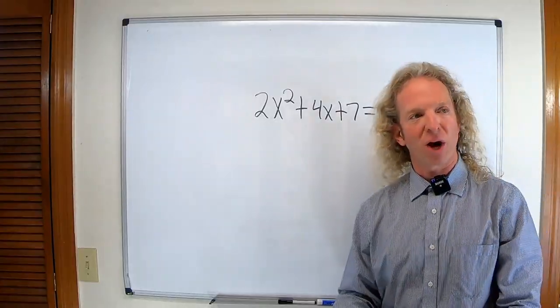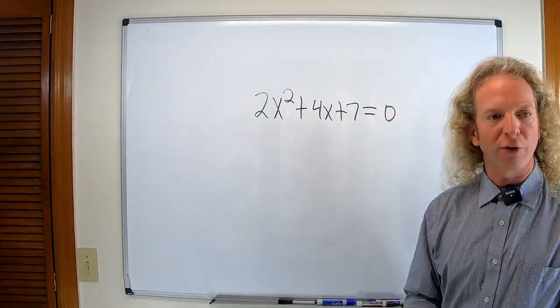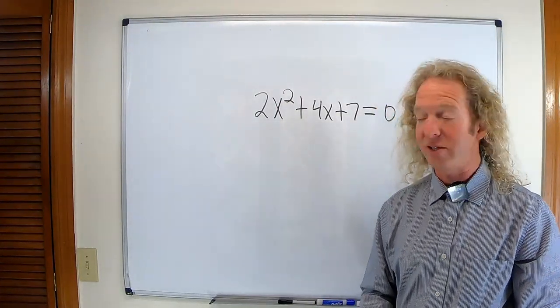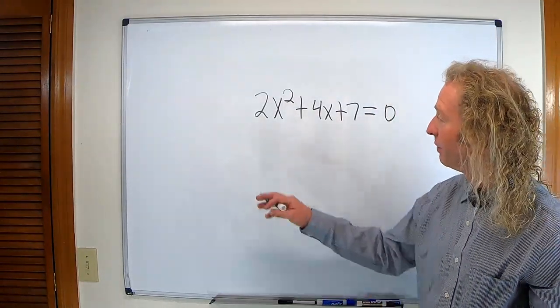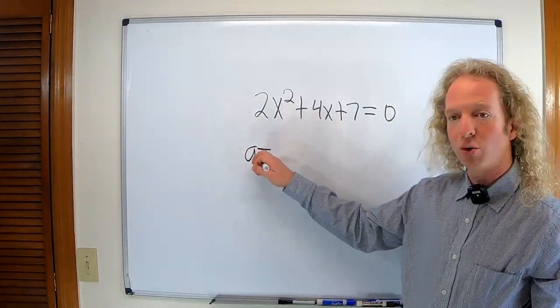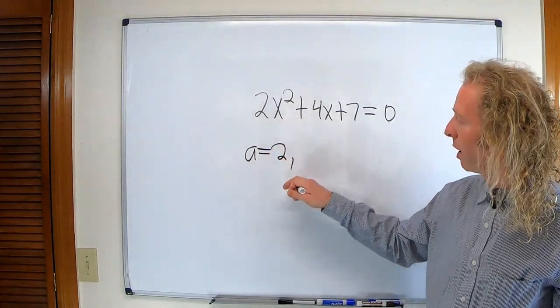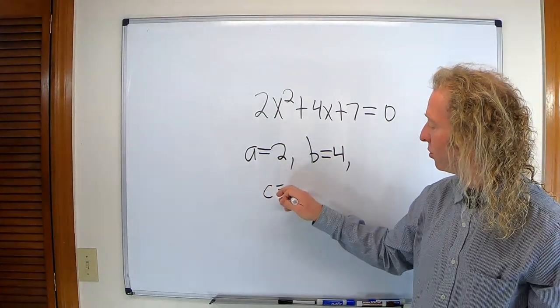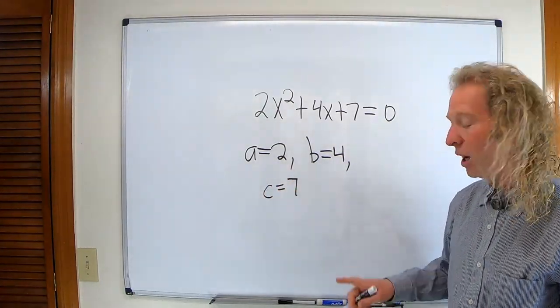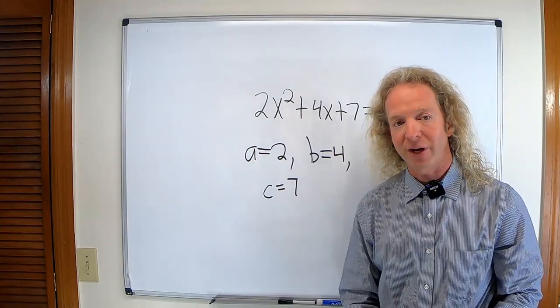So we have a quadratic equation and we're trying to solve for the value of x. The first thing to do is to identify A, B, and C. So A is equal to the number 2, B is equal to the number 4, and C is equal to the number 7. Any questions so far on that step?